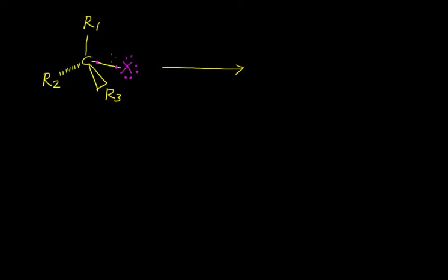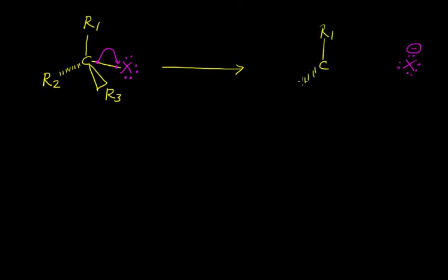Let us have a look at the stereochemistry of SN1 reaction. In the mechanism of SN1 reaction, the electrons present between the carbon and the halogen bond pull towards the halogen, and finally we get the halogen with 8 electrons having a negative charge, and we get the carbocation as an intermediate, with substituents R1, R2, and R3.